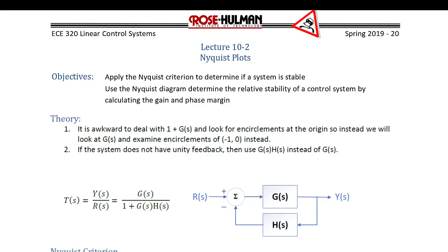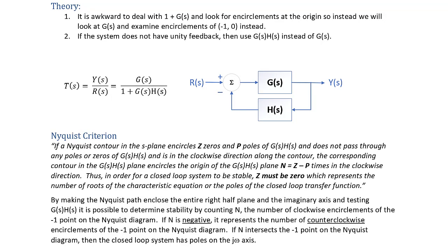Lecture 10-2: Nyquist plots and Nyquist criterion. The objective is to apply the Nyquist criterion to determine if a system is stable and use the Nyquist diagram to determine relative stability by finding the phase margin and gain margin. It is awkward to deal with 1 plus G(s) and look for encirclements at the origin, so instead we look at G(s) and examine encirclements of negative 1. If the system does not have unity feedback, use G(s)H(s). The transfer function T(s) equals G(s) over 1 plus G(s)H(s).